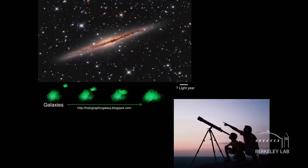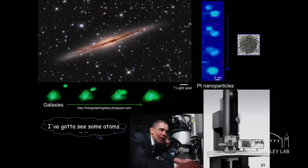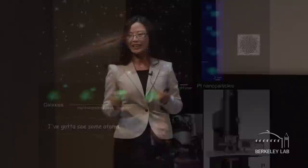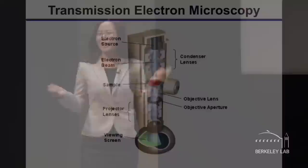Scientists use telescopes to study large matter like stars and galaxies. I use a transmission electron microscope to study the smallest matter — the atoms. Transmission electron microscope is a very powerful tool. Even President Obama was amazed by the atoms that can be visualized using a transmission electron microscope.